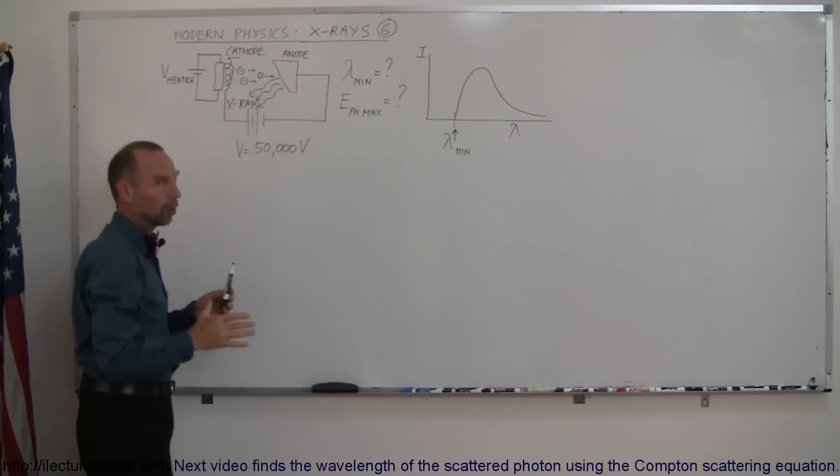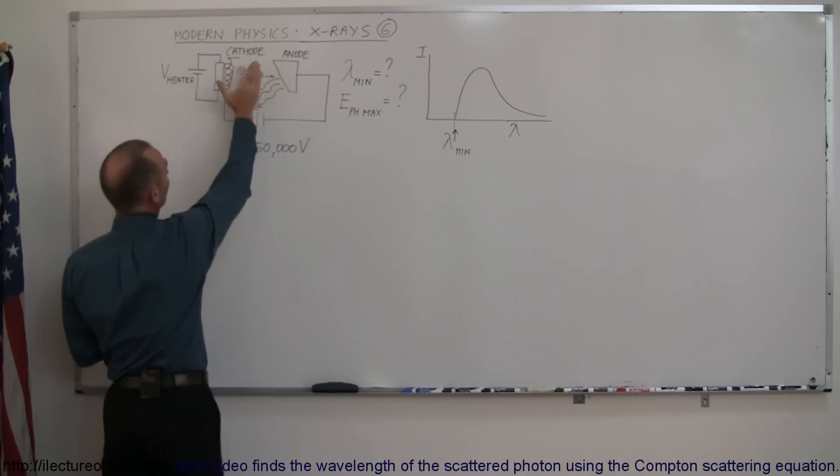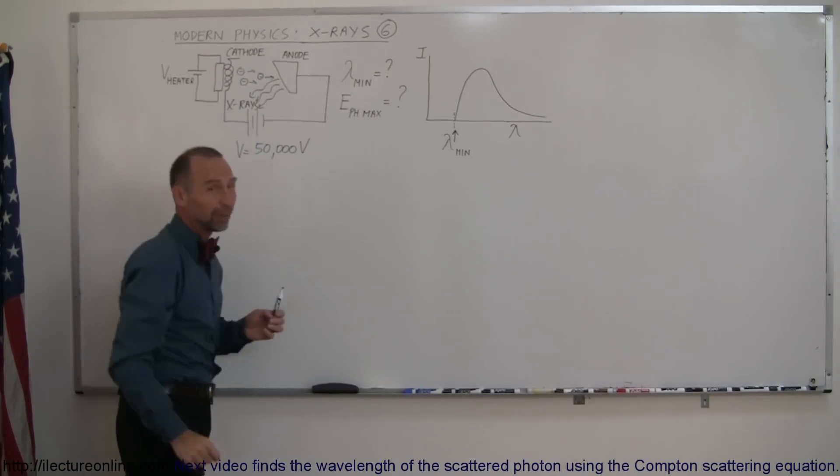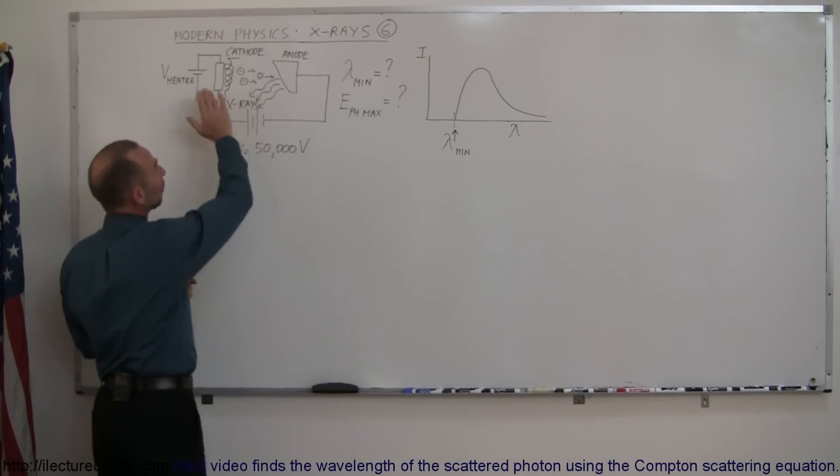You then apply a very large voltage like 50,000 volts that will cause a potential difference between the cathode and the anode of 50,000 volts, thus accelerating the electrons across the gap very quickly. They will slam into the anode.